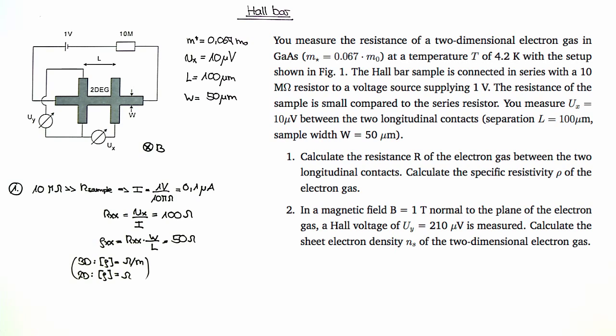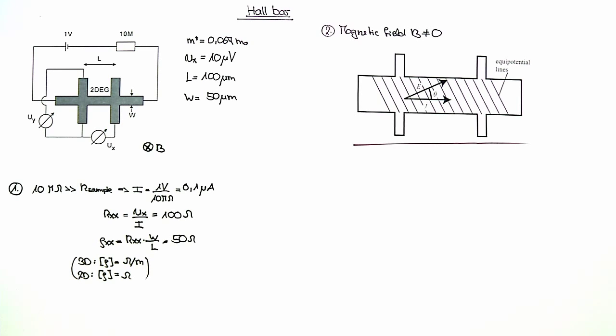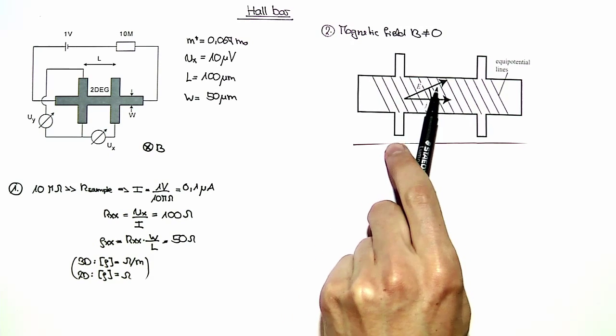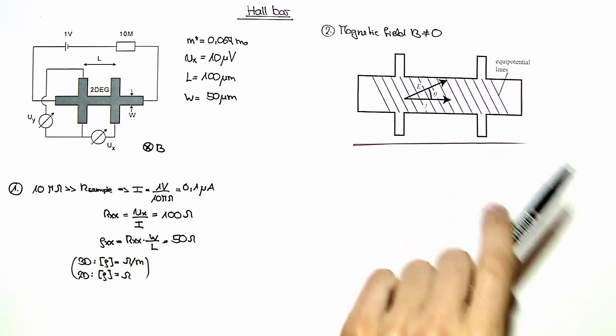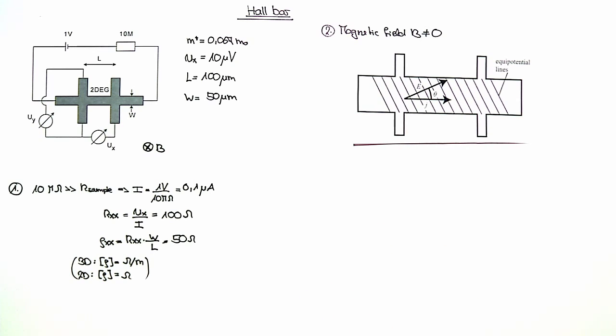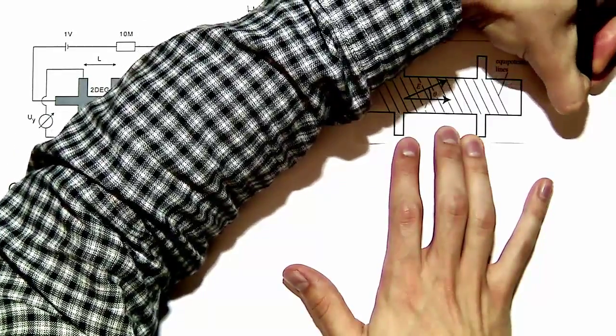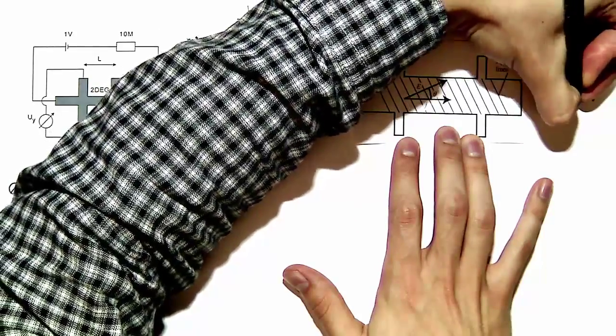For the next part of the exercise, a non-zero magnetic field is applied perpendicular to the sample. For this situation of non-zero field, a hole angle theta forms between the current density J and the electric field, which is perpendicular to the equipotential lines. This hole angle gives rise to a non-zero hole voltage Uy, which is measured as Uy being 210 microvolts for a magnetic field of one tesla.